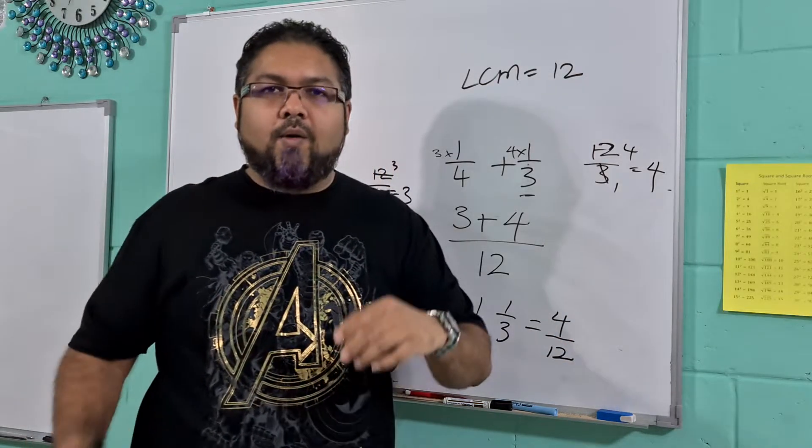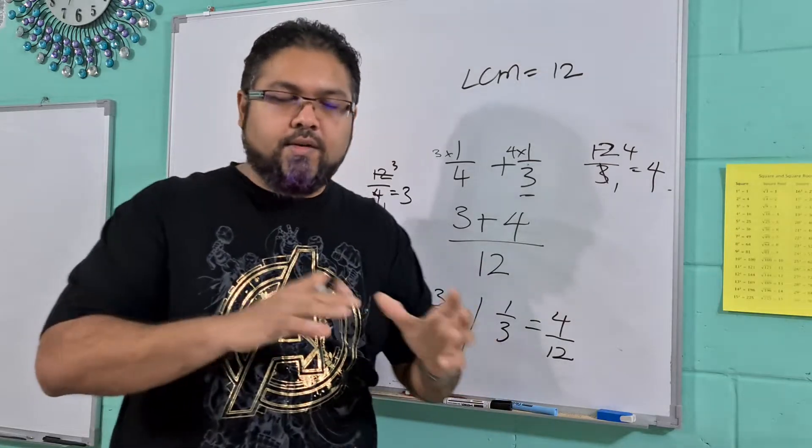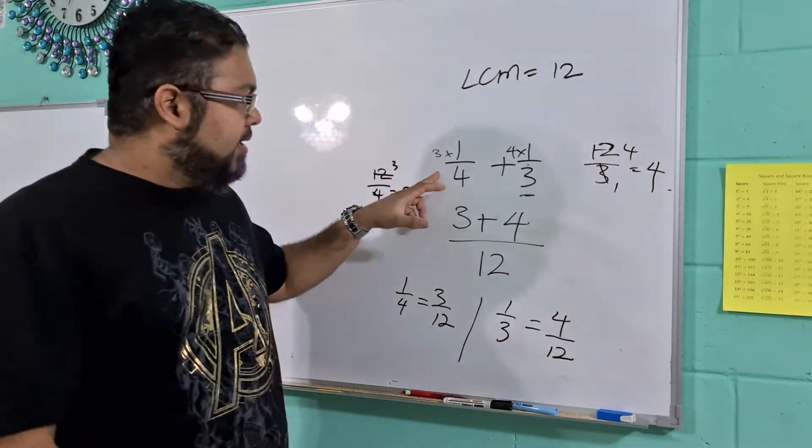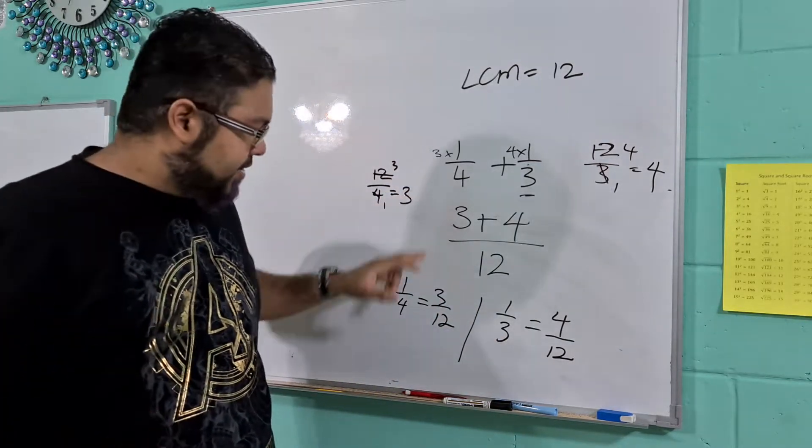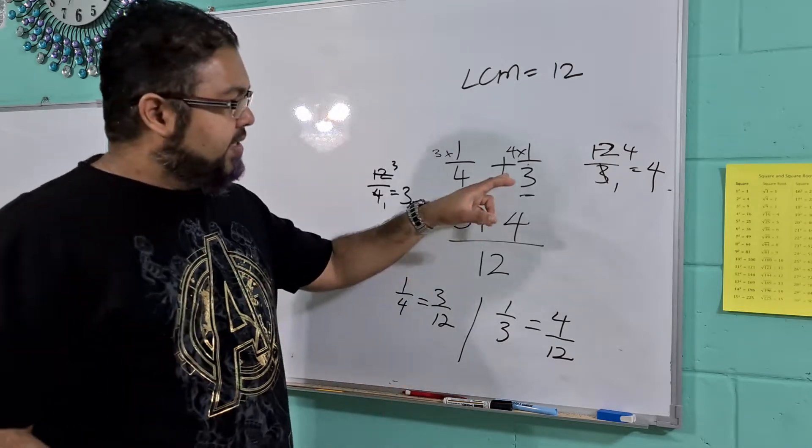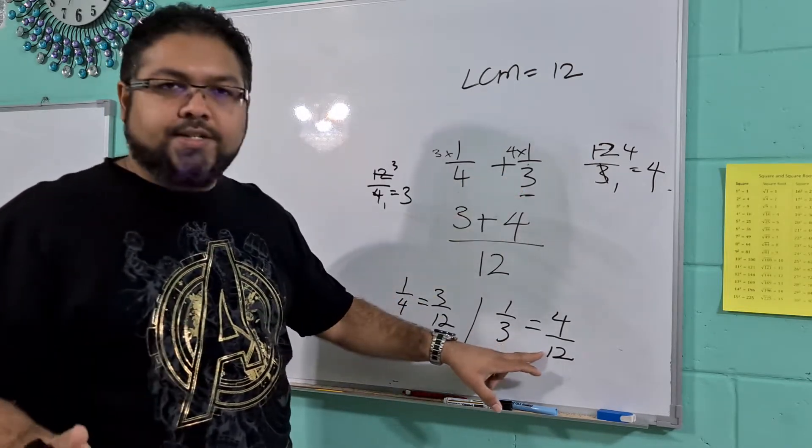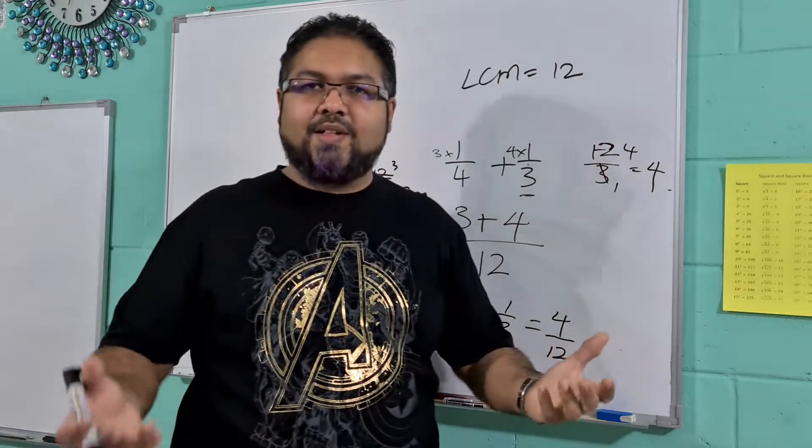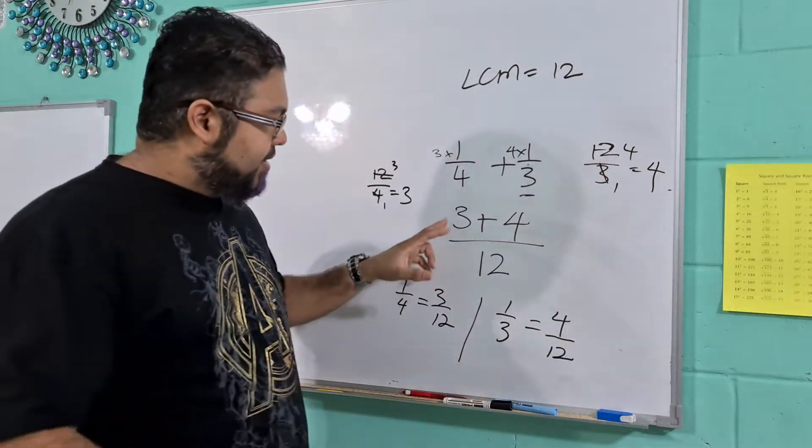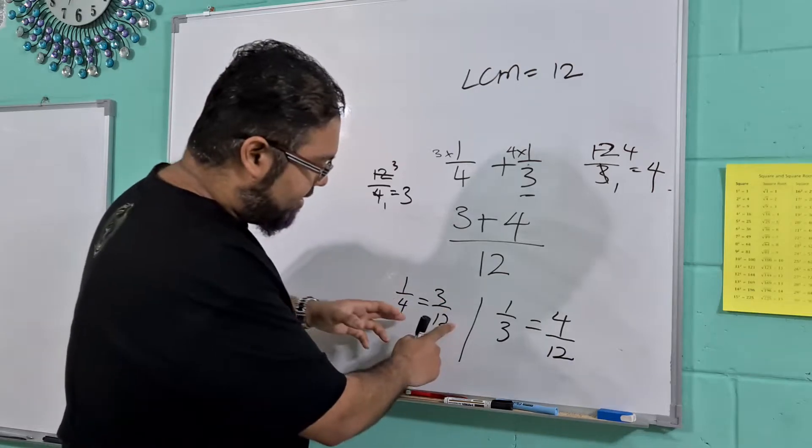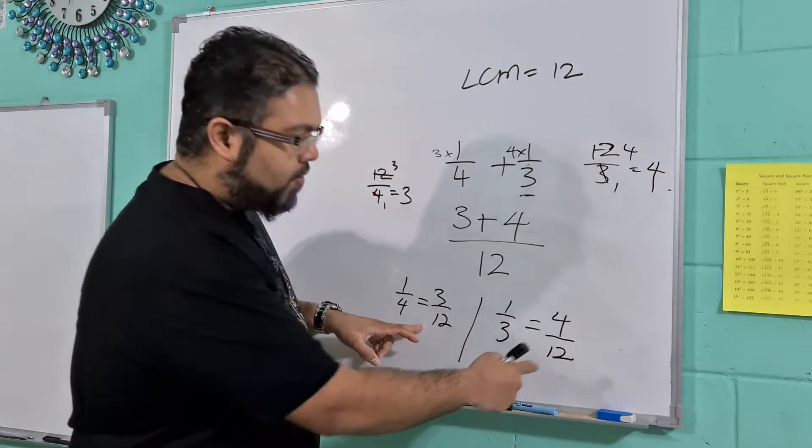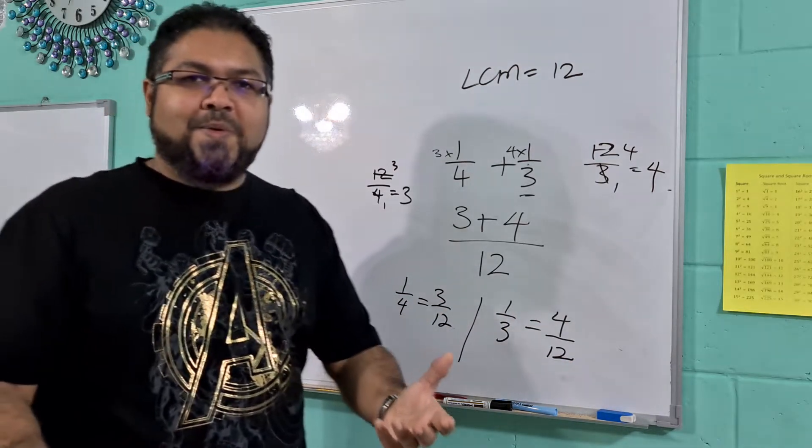So guys, all we just did in that whole LCM was turn a quarter into a fraction with the denominator as 12, and we turned 1 over 3 to a fraction where the denominator is 12 as well. So essentially we have 3 over 12 plus 4 over 12.